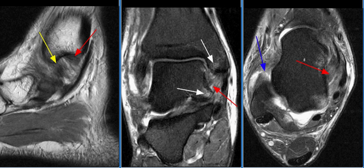The MR findings are consistent with deltoid ligament sprain or partial tear, as well as anterior talofibular and calcaneofibular ligament tear.